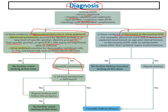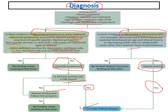We should quantify proteins by requesting 24-hour urinary protein. If more than 500 mg (0.5 gram), we should perform a renal biopsy. If not confirmed, we repeat the test and follow up closely. If 24-hour protein is above 0.5 gram — proceed to renal biopsy; if not — no further testing. If there is evidence of decreased GFR, repeat the test to confirm, because if persistent, we proceed to the invasive procedure of renal biopsy.